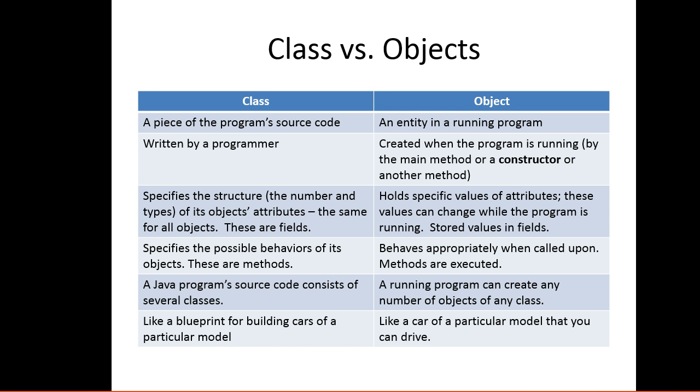Let's distinguish between a class versus an object - this is really important. A piece of the programmer's source code is a class. An object is an entity in a running program. A class is written by a programmer, whereas an object is created when the program is running.